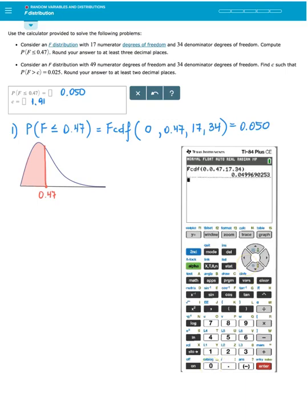Don't forget to round to three decimal places. And that yields, as I said, 0.050.